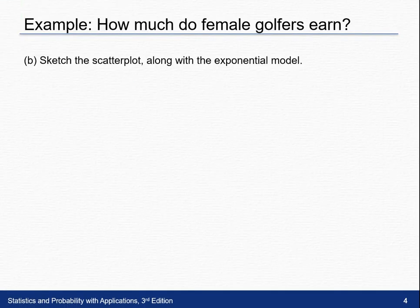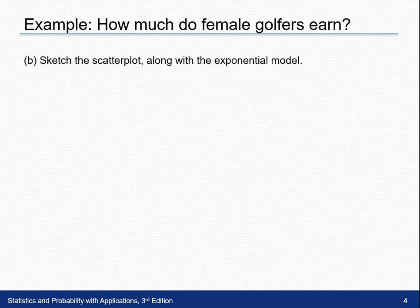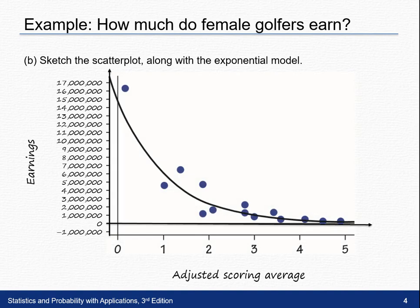In Part B it says to sketch the scatter plot along with the exponential model. You can use the applet for this as well. If not, you would label and scale each axis — your x-axis would be your explanatory variable and your y-axis would be the earnings. Using the applet, you can see the exponential model plotted and how it fits the data points.